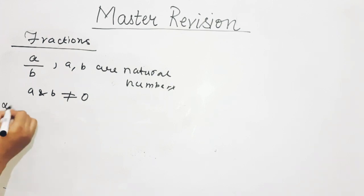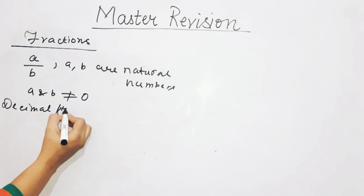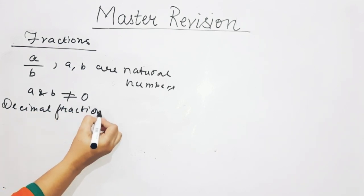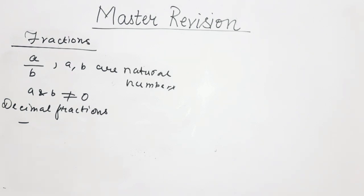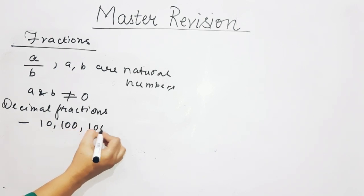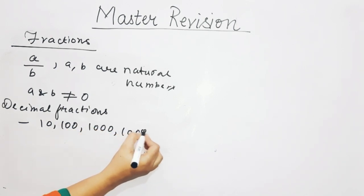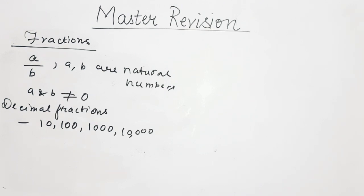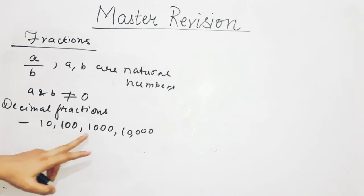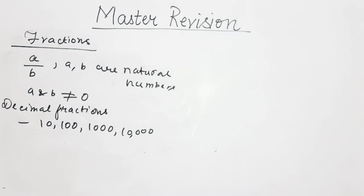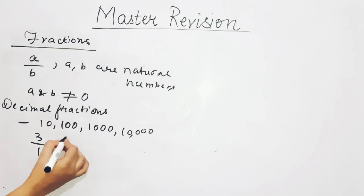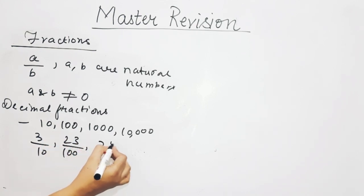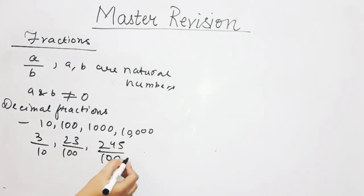Types of fractions — first type: decimal fractions. Decimal fractions are fractions which have a denominator of 10, 100, 1000, or 10,000. Examples: 3 upon 10, 23 upon 100, 245 upon 1000.